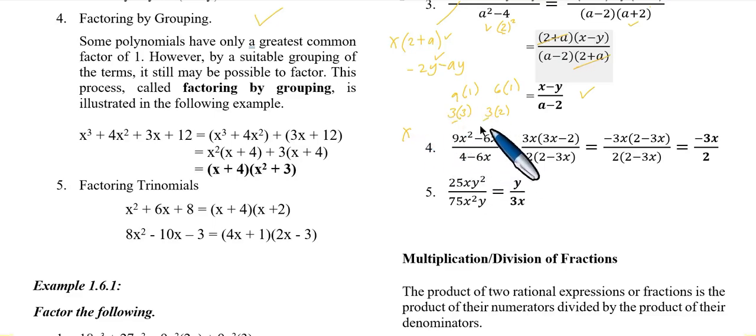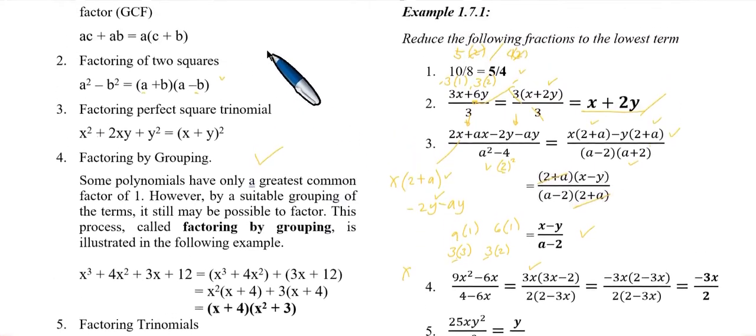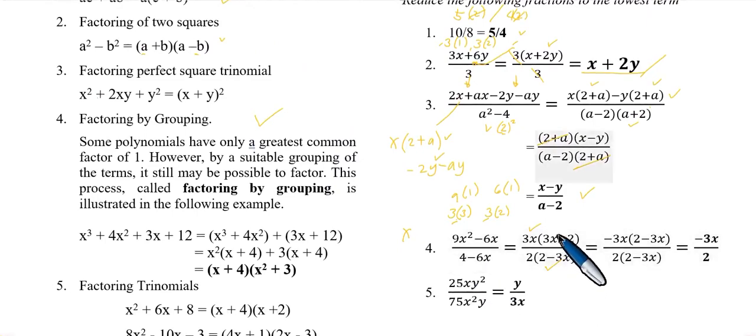Therefore, the common factor is 3x. What remains is 3x minus 2. Then in the denominator, factor out again. You can use GCF, or greatest common factor. You can factor out 2.